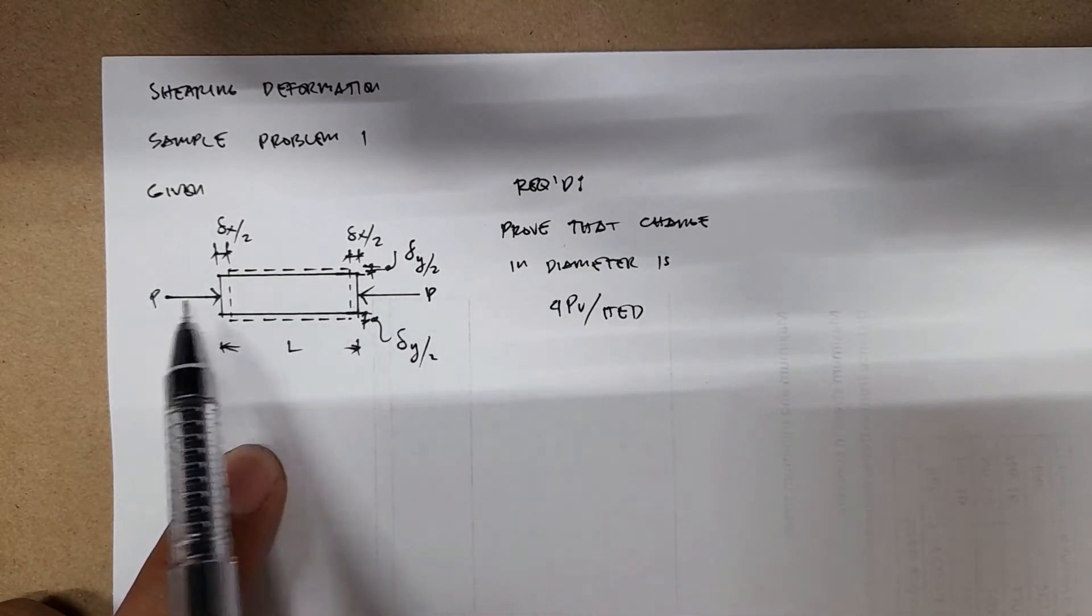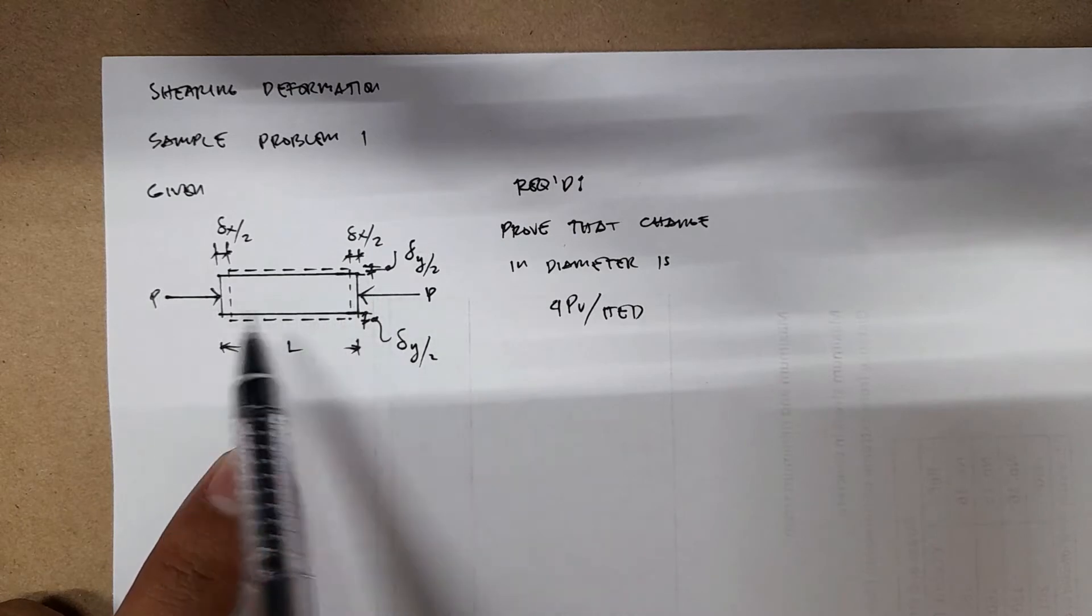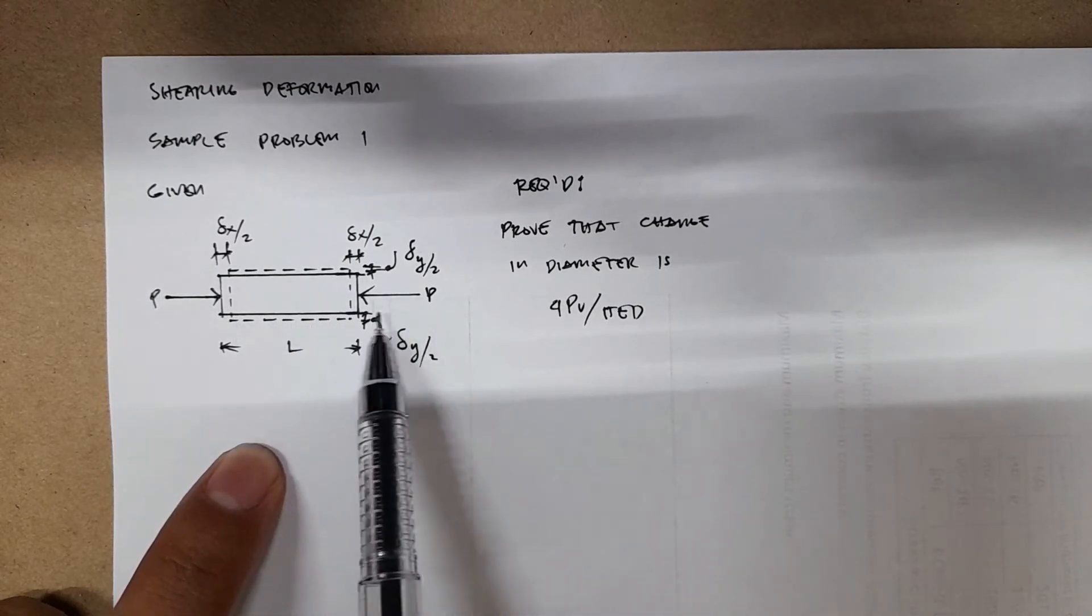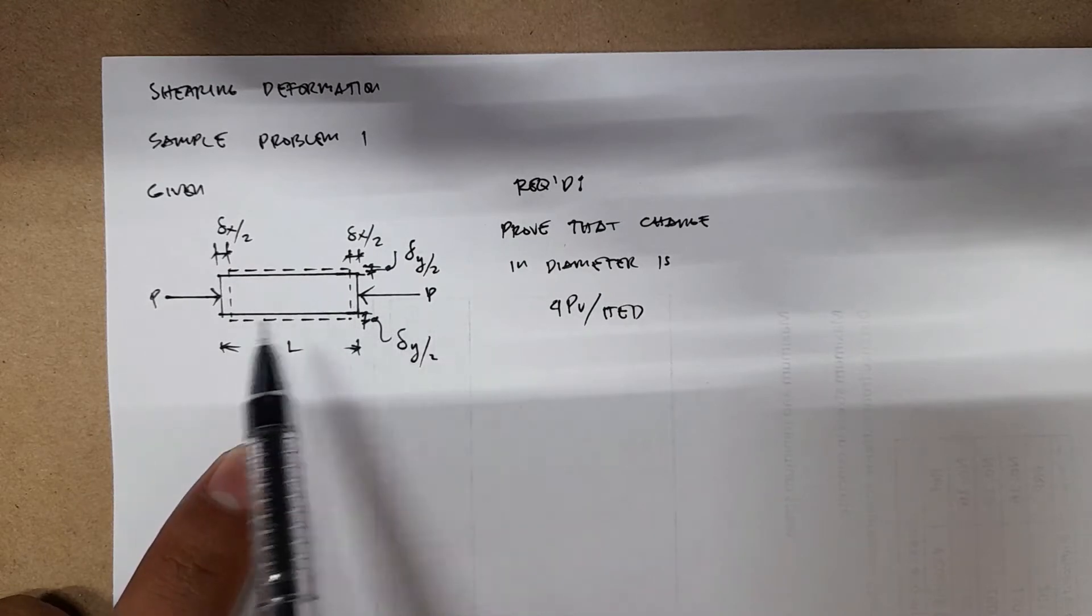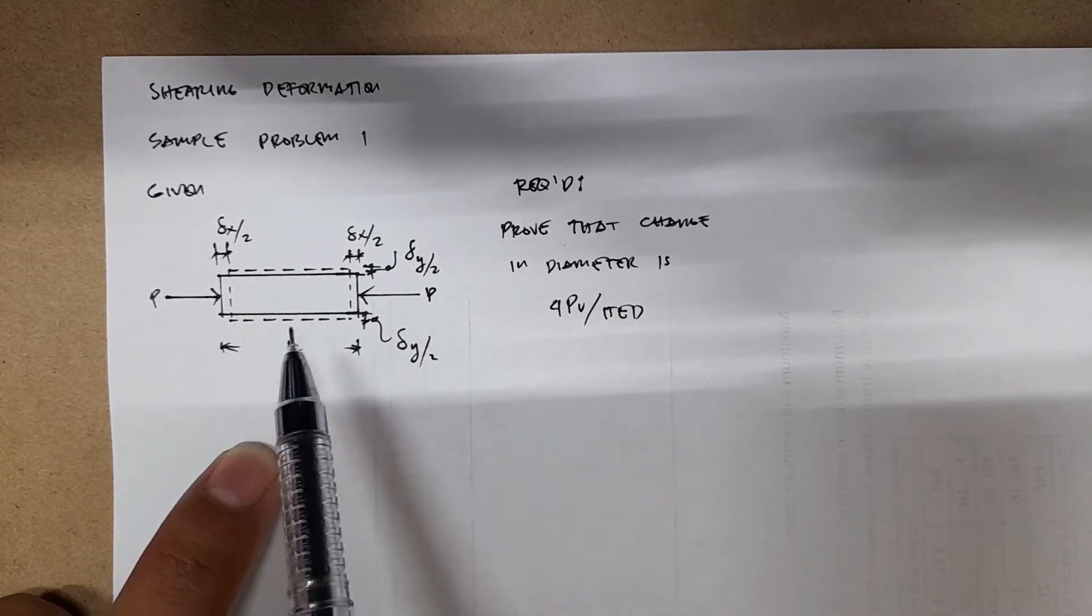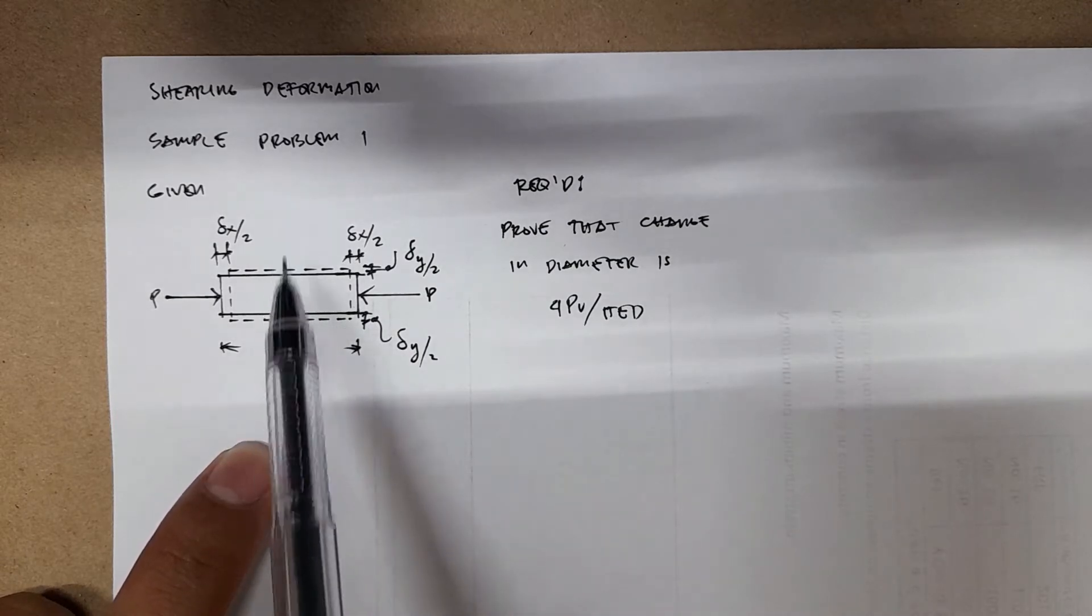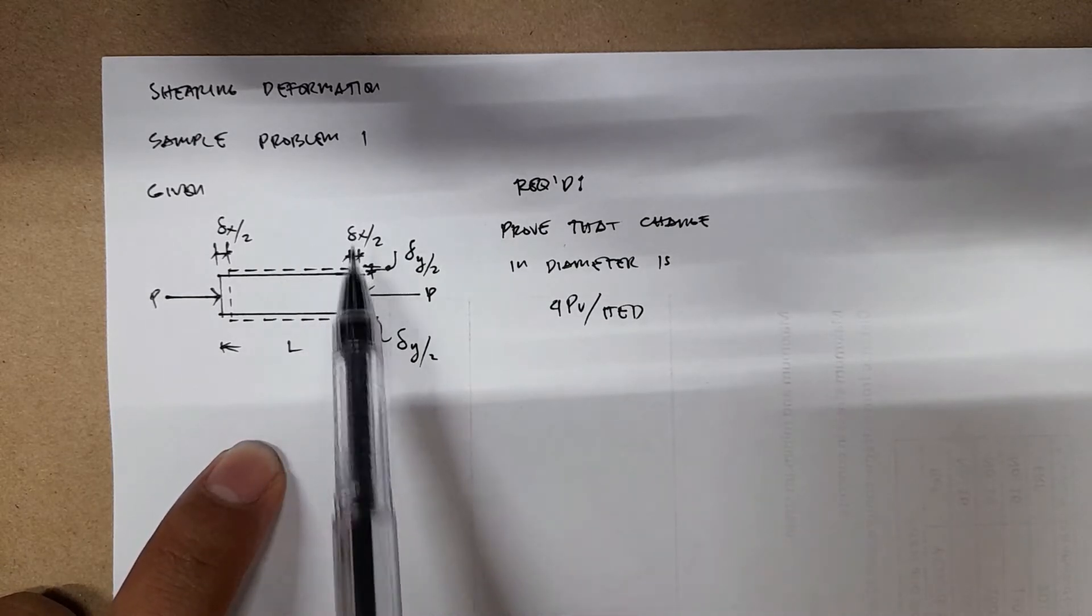And we have compressive forces acting on this side, we have force P. And then because of the action of these forces, compressive forces on both sides, we're expecting shortening of length L and lengthening of your diameter.